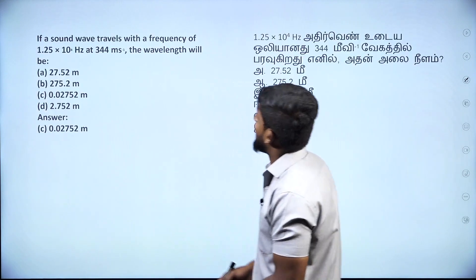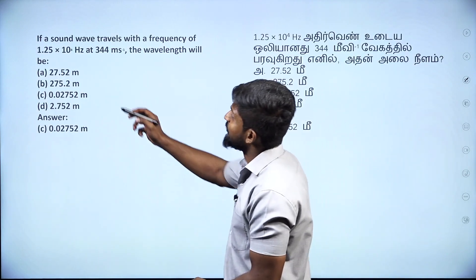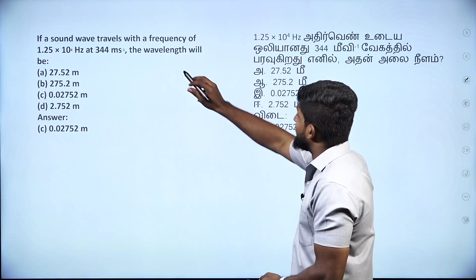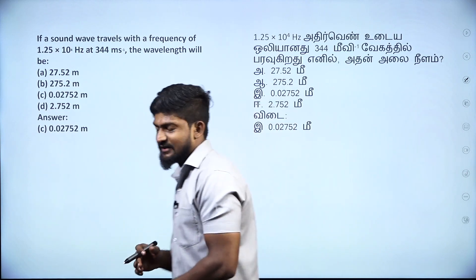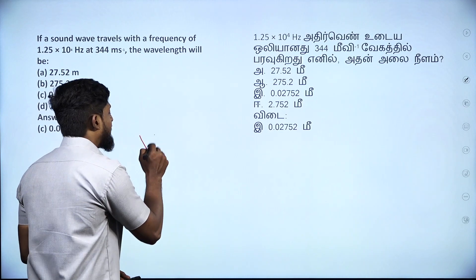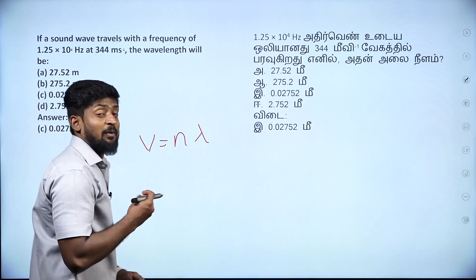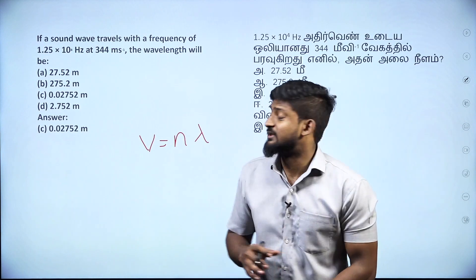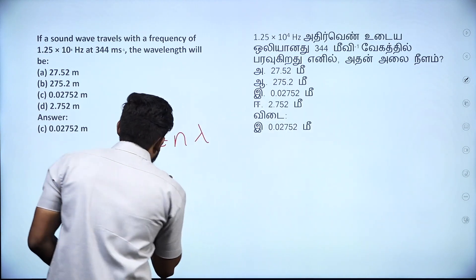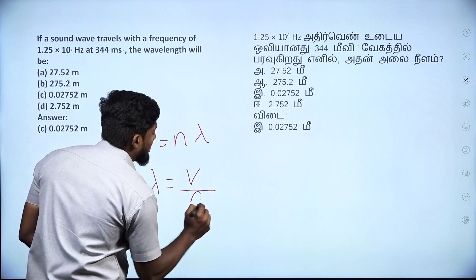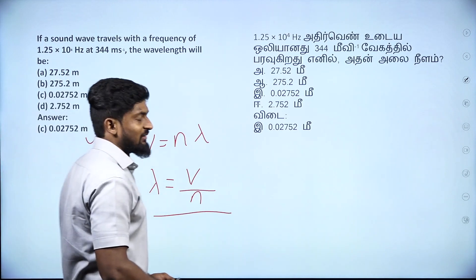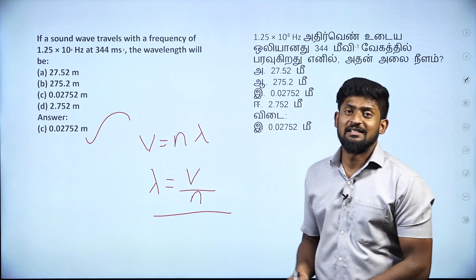If a sound wave travels with a frequency of 1.25 × 10⁴ hertz at 344 meters per second, the wavelength will be: v equals n times lambda, so lambda equals v divided by n. Substituting the values, lambda equals 0.02752 meters.